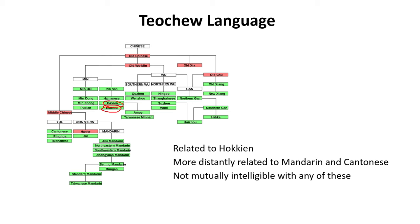It is also more distantly related to Mandarin and Cantonese, which are probably the two most well-known varieties of Chinese. So it is not mutually intelligible with either Mandarin or Cantonese. And many linguists consider that Diaoju is one of, if not the most conservative dialect or variety of all the Chinese languages.